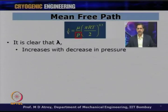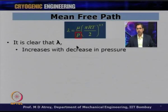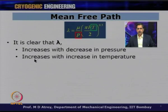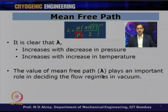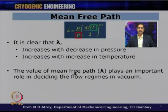Lambda increases with decrease in pressure — as pressure is reduced, the number of particles decreases, so molecule-to-molecule collisions become less frequent and the path between collisions grows. Lambda also increases with increase in temperature, since temperature appears in the numerator. The mean free path plays an important role in deciding the flow regimes in vacuum, similar to how we have different flow regimes in the continuum region.